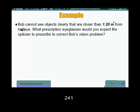Now, here, Bob cannot see closer than 1.2 meters. So that tells us that Bob is farsighted.